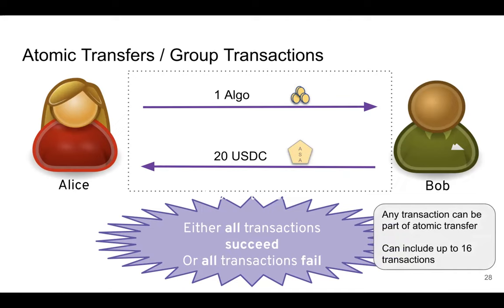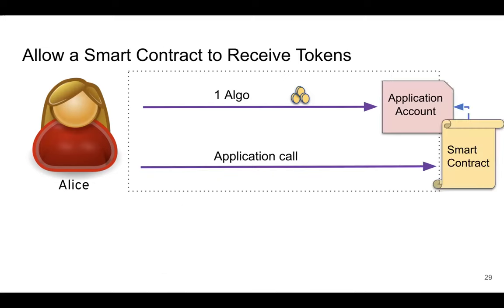The group size limit is 16. It needs to be small because you don't want to roll back 10,000 transactions at once — if something fails midway through 10,000 transactions you'd spend a lot of time evaluating and rolling back. The number 16 is somewhat arbitrary; it could have been 32, but 16 was chosen. The way you use atomic transfers to pay a smart contract is: instead of just paying the application account and hoping it knows, you group the payment and the smart contract call together in the same atomic transfer.